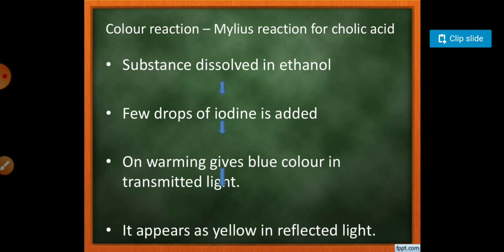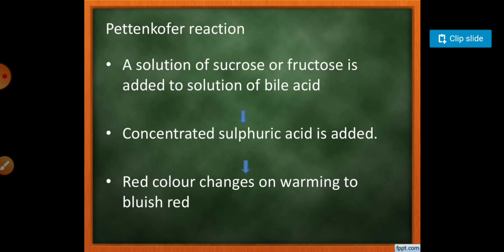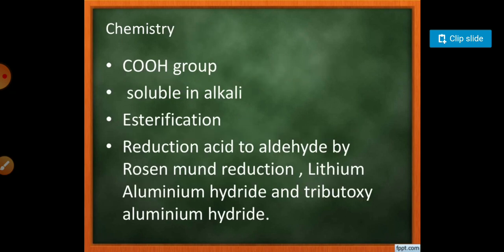For color reactions, the substance dissolved in ethanol with a few drops of iodine added on warming forms bile color and transmits light, appearing yellow in reflected light. The Hammersten test involves cholic acid with 25% HCl showing a violet color that changes to yellow on heating. The Pettenkofer reaction involves adding a solution of sucrose or fructose to bile acid solution, then concentrated sulfuric acid, producing a red color that changes to bluish on warming.